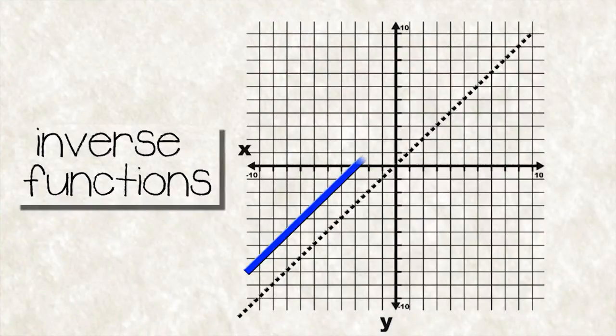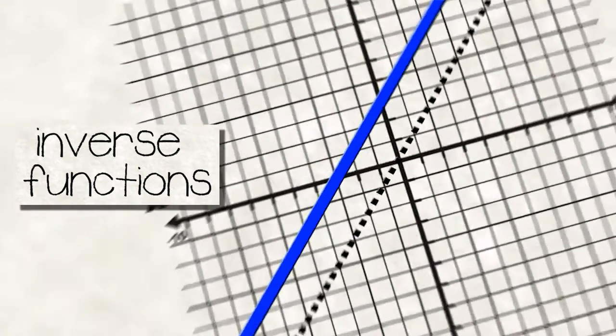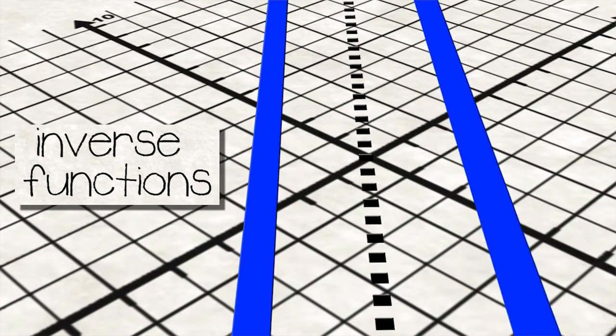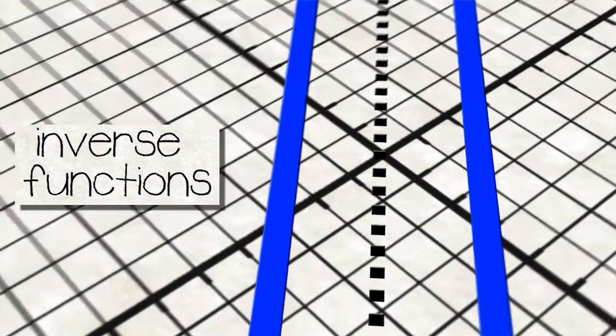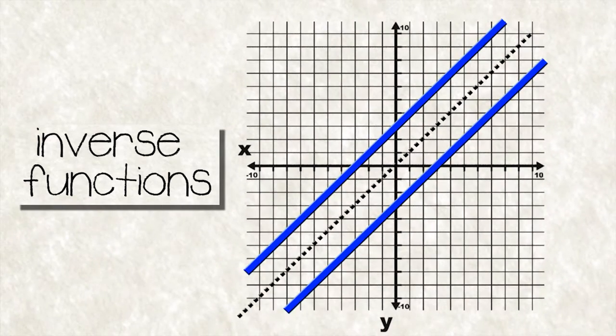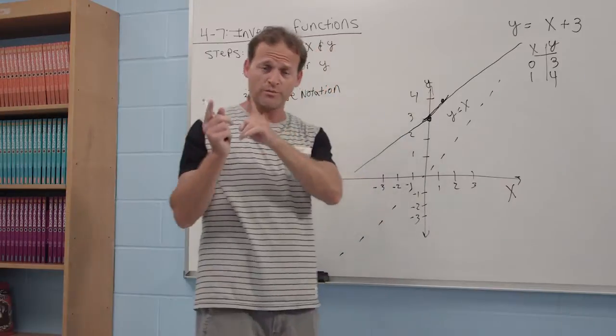We're going to take this line here, this graph here, and we're going to pick it up and literally flip it over this dotted line, which is the mirror. And it will look like a mirror image. It will look exactly the same, but just reversed, just like looking into a mirror.